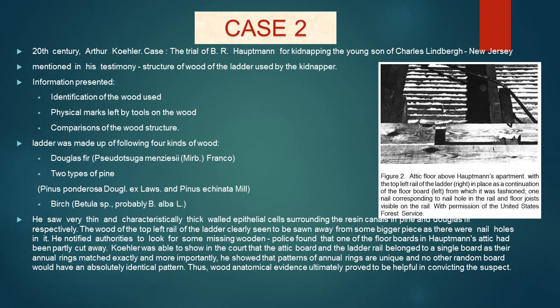The wood of the top left rail of the ladder clearly appeared to have been sawn from a larger piece, as there were nail holes in it. Koehler notified authorities to look for a missing wooden board in any place linked with the suspect. Police found that one of the floorboards in Hauptmann's attic had been partly cut away. Koehler was able to show in court that the attic board and the ladder rail belonged to a single board, as their annual rings matched exactly. He also showed that patterns of annual rings are unique, and no other random board would have an absolutely identical pattern. Thus, wood anatomical evidence ultimately proved helpful in convicting the suspect.